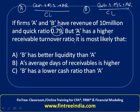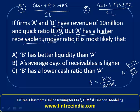A has a higher receivable turnover ratio. Receivable turnover ratio is calculated as sales divided by average accounts receivable. A has a higher turnover ratio, and we know that sales of both firms are the same. So the fact that the ratios are different and A has a higher ratio means the denominator of A must have been a lower number. This means the average accounts receivable value of A is lesser than B, and that's why A has a higher turnover ratio.